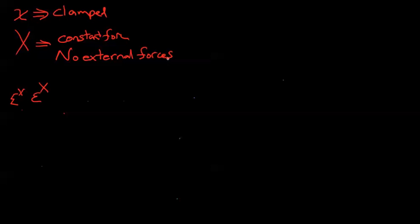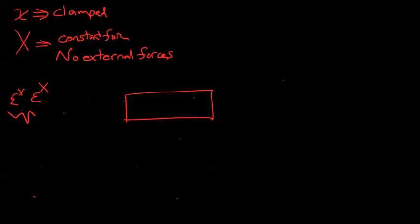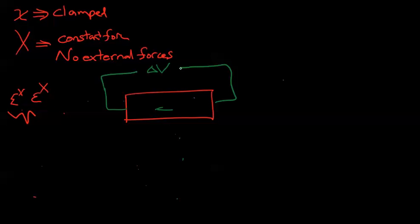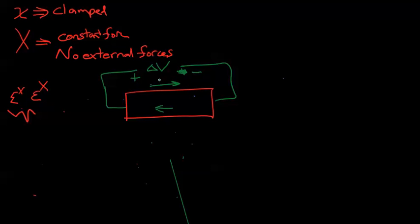Now we're going to see how this affects these material properties. We have a material that we are not going to clamp. It has a polarization vector going one way, a voltage potential across it, and we assume there's a positive potential on one side and a negative potential on the other. This causes an electric field to go across that way.